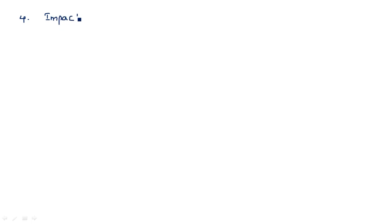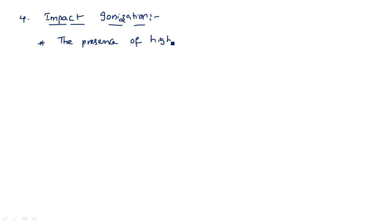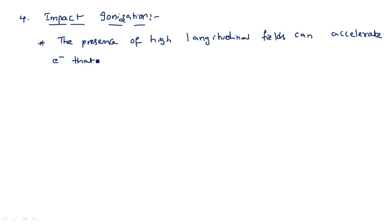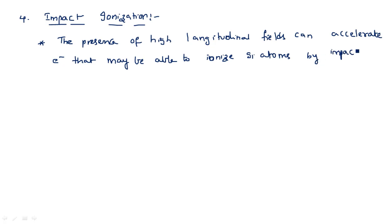Now let us see the fourth effect, which is impact ionization. The presence of high longitudinal fields can accelerate electrons that may be able to ionize silicon atoms by impacting against them.